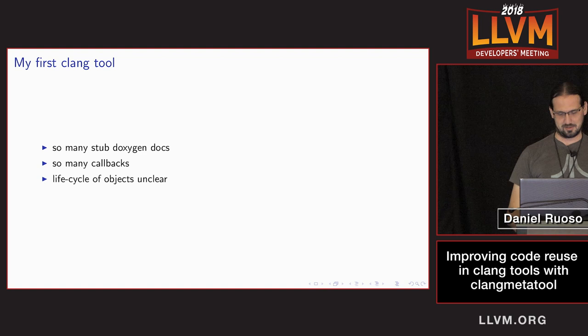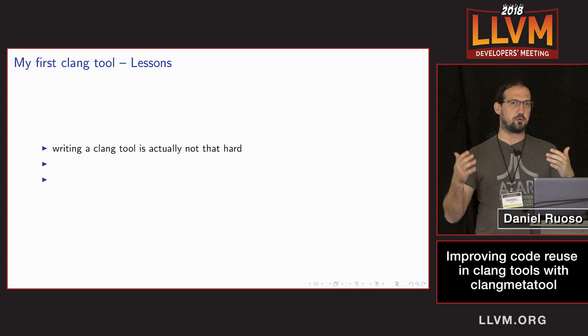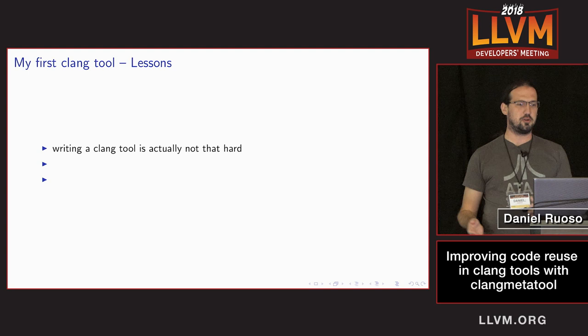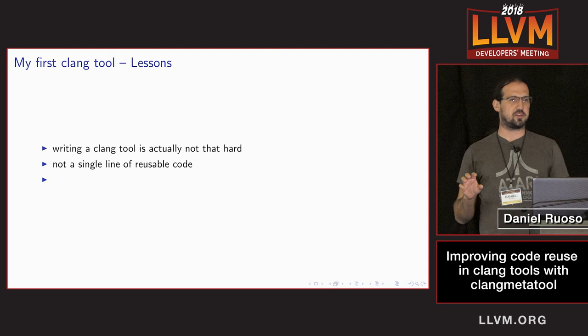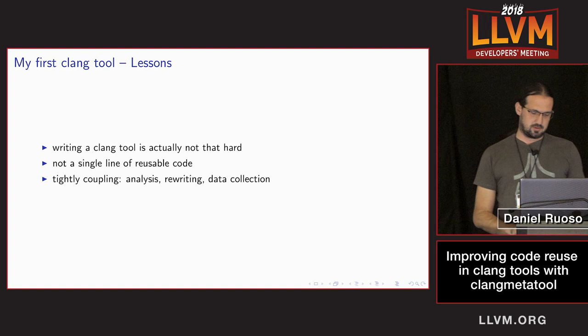But I did have some interesting lessons. The first is that writing Clang tools was actually not that hard. Once you get through the barrier of reading some of the code to understand what functions do, you end up with a tool you get pretty happy with — it actually works. I had a functioning reimplementation of include-what-you-use. But there was not a single line of reusable code. There wasn't a single file that could be taken out and reused somewhere else. The analysis was tightly coupled with the rewriting, which was mixed with the data collection — needless to say, that's not good.